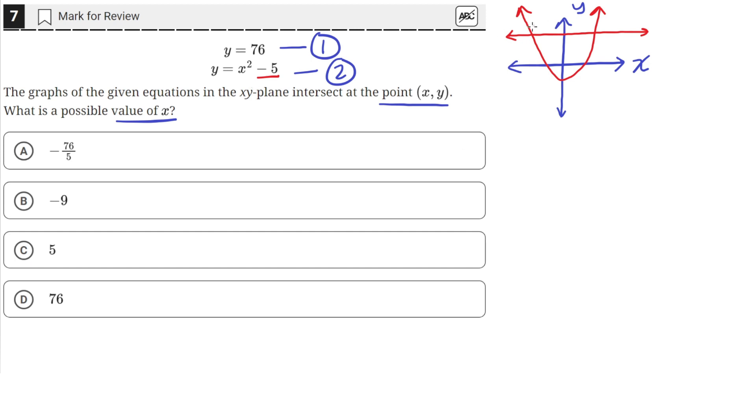Okay, so we need to find the coordinates of the intersection, or really just the x values of the intersection. And we can do that by setting these two equations equal to each other. So we have y equals 76 and y equals x squared minus 5. So y is equal to both of these quantities, so we can just set them equal to each other.